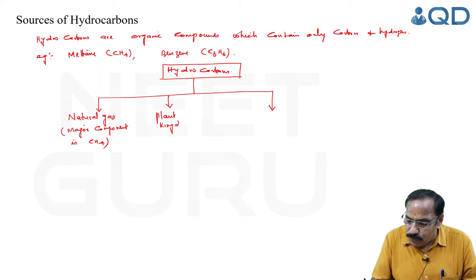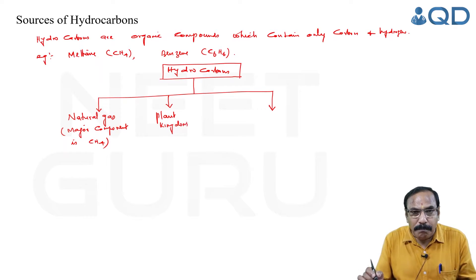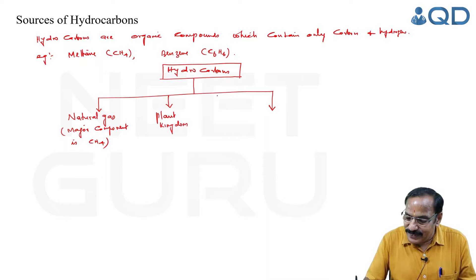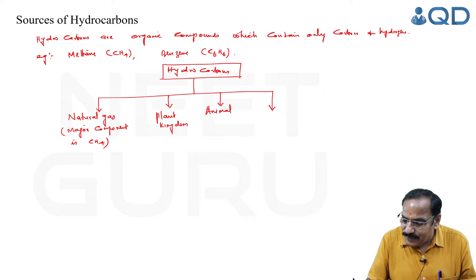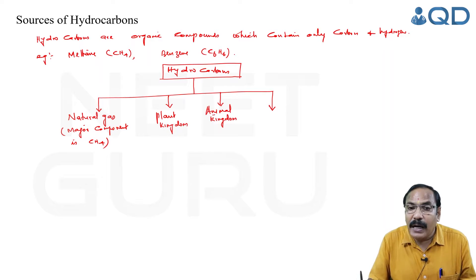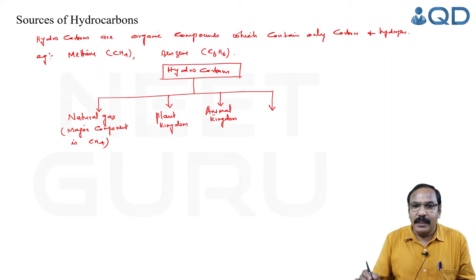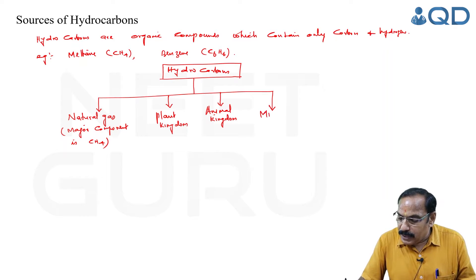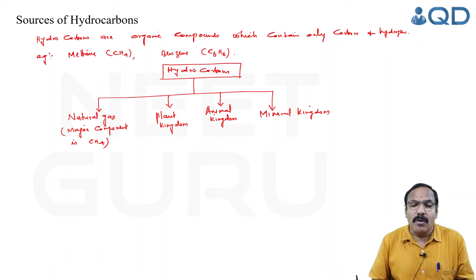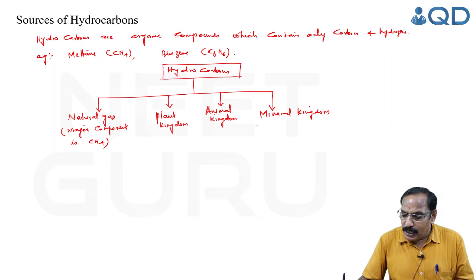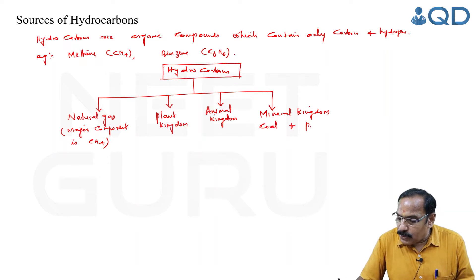The second source of hydrocarbons is the plant kingdom — a wide variety of organic compounds are extracted from plants. Then we have the animal kingdom — a number of organic compounds are extracted from animals. Finally, we have the mineral kingdom. Minerals are naturally occurring compounds of elements, and the mineral kingdom includes coal and petroleum.